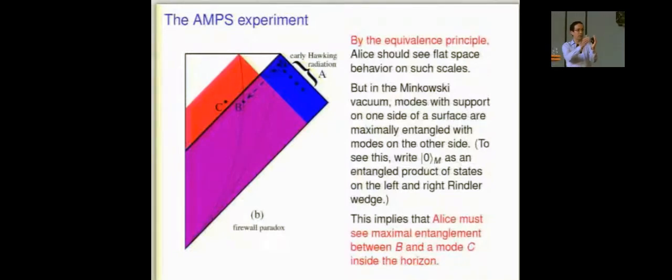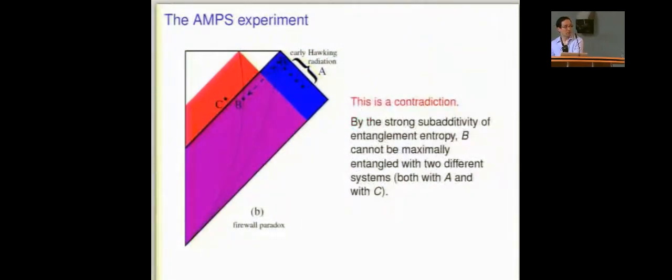And as you know, in the Minkowski vacuum, just think of Rindler space. You have some surface dividing Minkowski space. You think about modes that have support only on one side. Those are modes that sort of fill up the right Rindler wedge. Modes that have support only on the other side. You can write the Minkowski vacuum as a sum over products of such modes. It's a highly entangled state. You have to sum over products of left and right modes. And so that's what the Minkowski vacuum is. So for Alice to see flat space physics, she has to see maximal entanglement between modes on the right and on the left of this dividing line. And B is a mode that's on the right with support only on the right. So she has to see B maximally entangled with C. And recall that we had already decided that B has to be maximally entangled with A according to Bob by unitarity. And that's a contradiction.